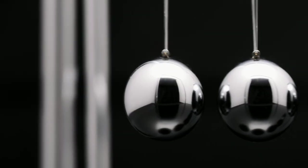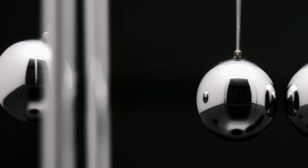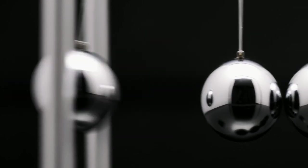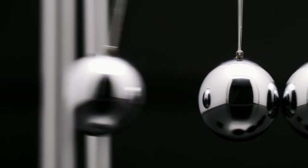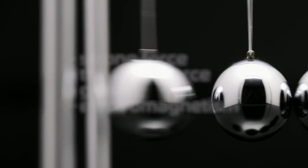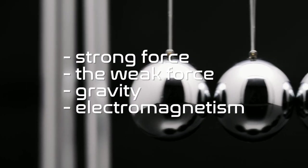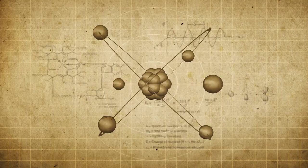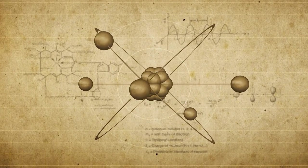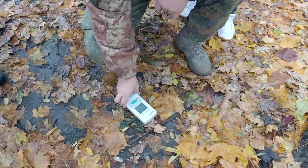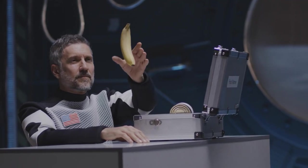To explain magnetic fields, we first have to talk about where they come from. In physics, there are four fundamental forces and pillars of the rules of our universe: the strong force, the weak force, gravity, and electromagnetism. The strong force keeps atomic nuclei together. The weak force governs radioactive decay. Gravity deals with mass interactions. And lastly, electromagnetism is all about charges.